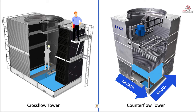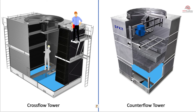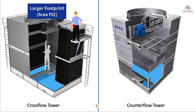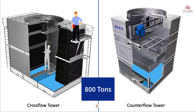The counter flow for the same tonnage is going to be taller. When figuring out where to put the tower, you have to look at the physical area of the space, how the air can move around, and what walls may be in the way. Because of the larger footprint of the cross flow tower, its operating weight and shipping weight are often more and it may also require additional structural support legs. At around 800 tons, the footprint area differences between counter flow and cross flow can change.